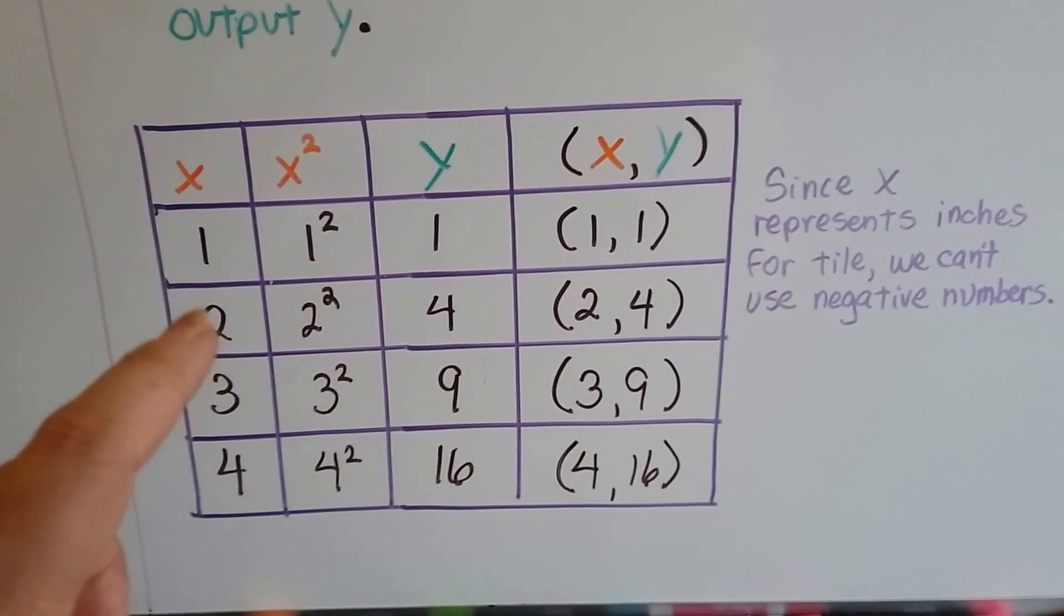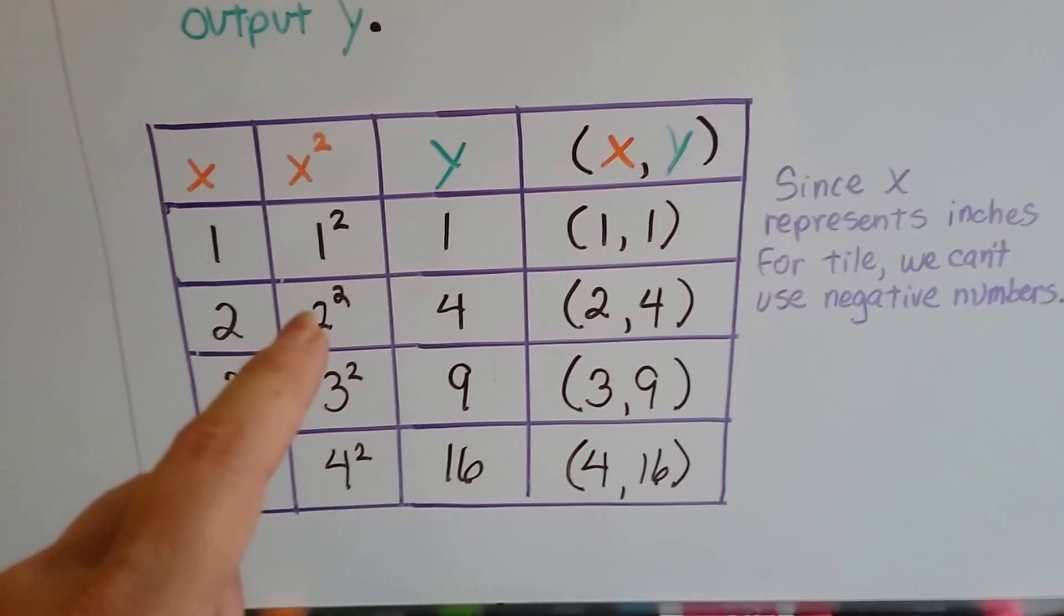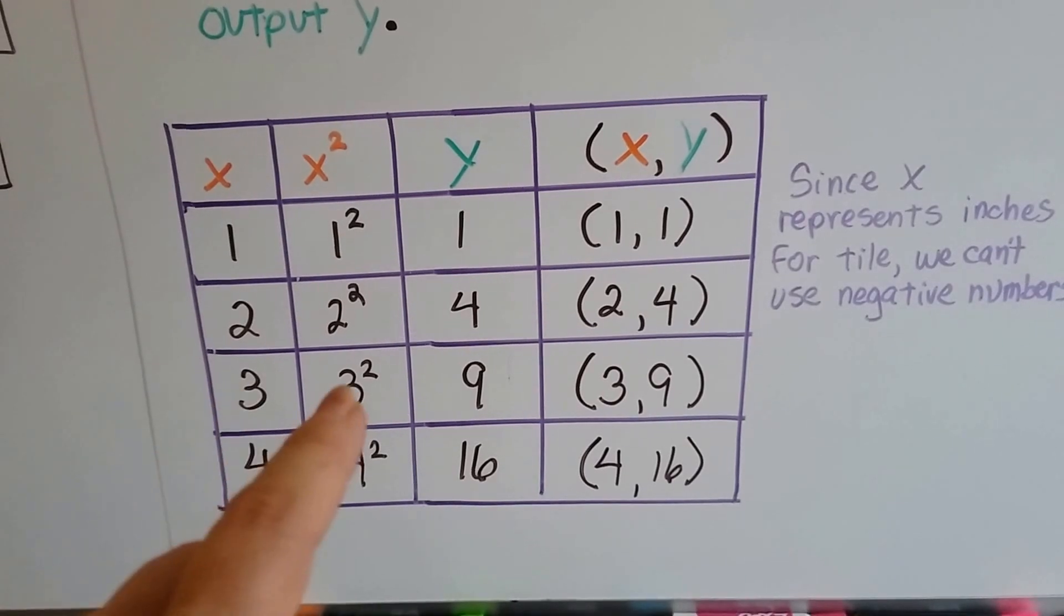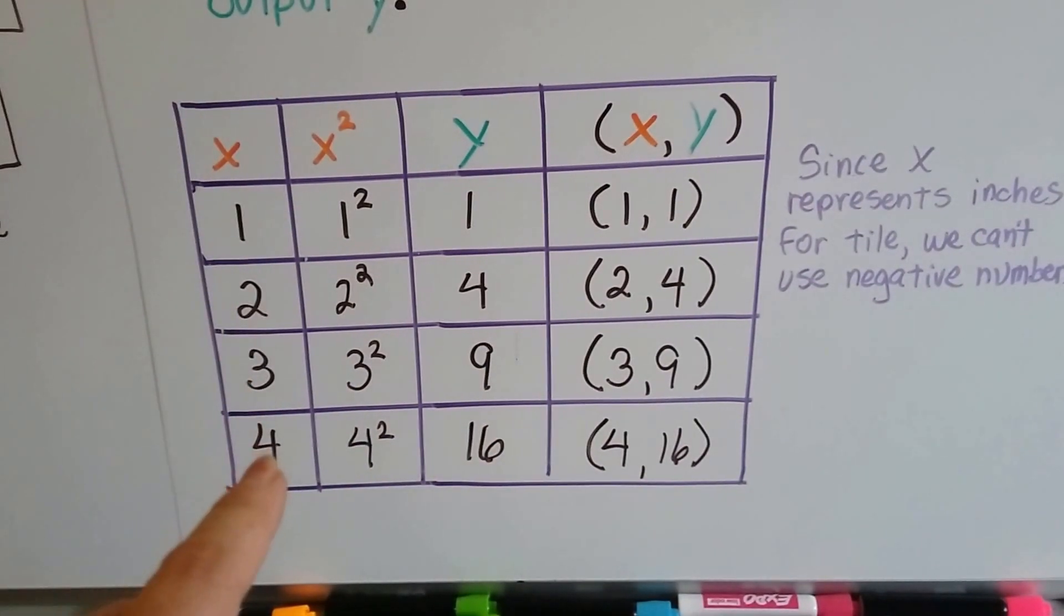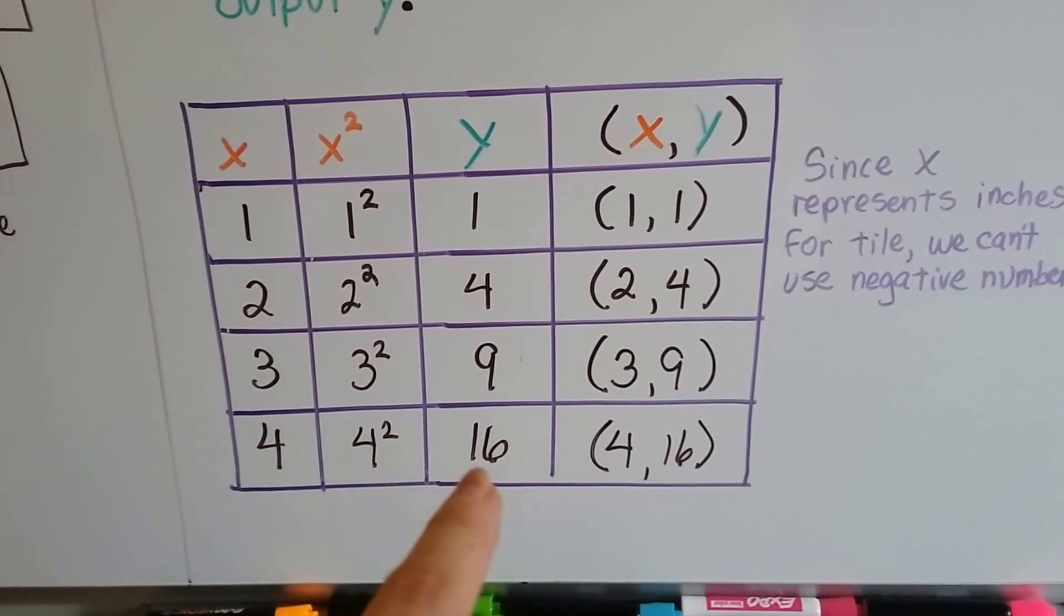If the tile measured two inches on one side, then its area would be two times two. That would be four. If a tile was three inches on one side, the area would be three times three. That would be nine. And if the tile's length on one side was four inches, the area would be four times four. That's 16.